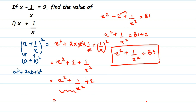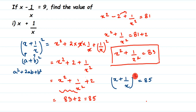So this becomes 83 plus 2, which is equal to 85. So x plus 1 by x whole square is equal to 85. Now I have to find only x plus 1 by x — we don't want the square. To remove the square we take the square root on both sides. On the left side the square and square root cancel, giving x plus 1 by x. On the right side we get square root of 85. So x plus 1 by x is equal to square root of 85.